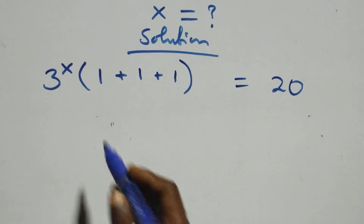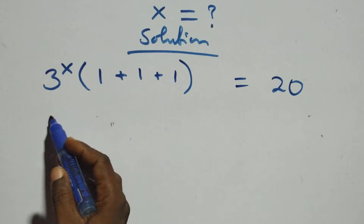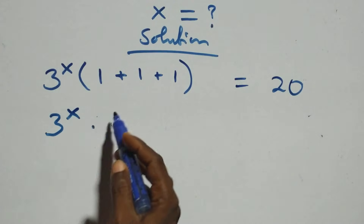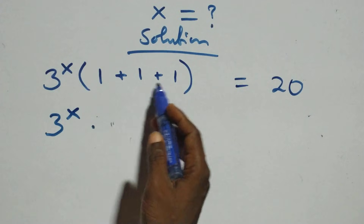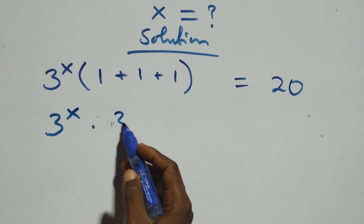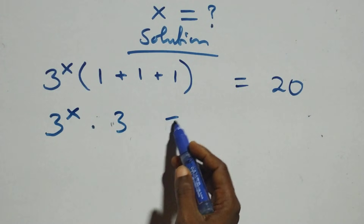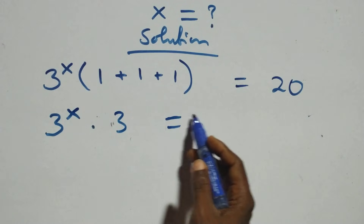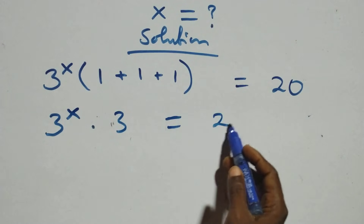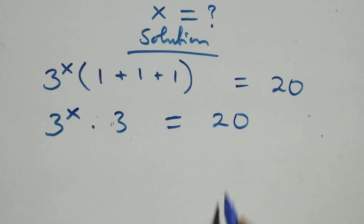This is the same thing as 3 raised to power x times 1 plus 1 plus 1, which is 3, and that equals to 20.